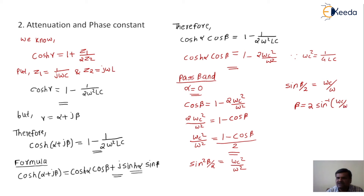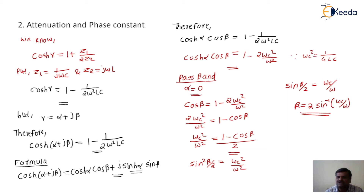This is the phase propagation constant in the passband of the high-pass filter. Note the difference from the low-pass filter: for a low-pass filter, β equals 2 sin⁻¹(ω/ωc), whereas here for the high-pass filter it is the reciprocal: β equals 2 sin⁻¹(ωc/ω). That is the only difference; the remaining form is the same.